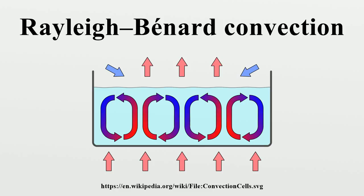Then, the temperature of the bottom plane is increased slightly, yielding a flow of thermal energy conducted through the liquid. The system will begin to have a structure of thermal conductivity. The temperature, and the density and pressure with it, will vary linearly between the bottom and top plane. A uniform linear gradient of temperature will be established.